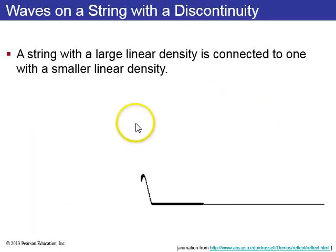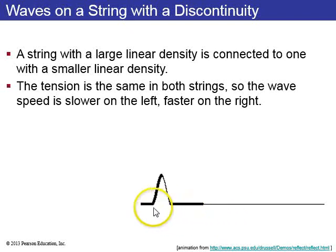So waves on a string with a discontinuity. A string with a large linear density is connected to one with a smaller linear density. And the tension is kept same in both strings. So if you send a pulse, wave pulse along the heavier string, it moves slowly in the heavier string. And then when it hits the lighter string, it speeds up.